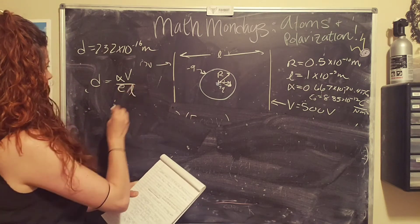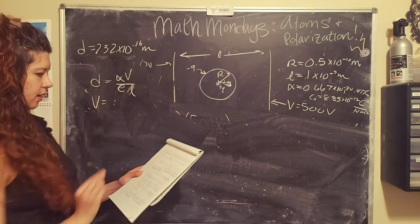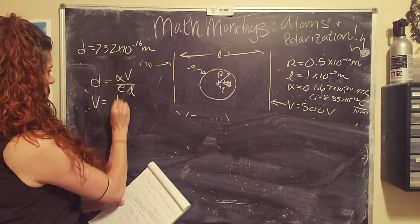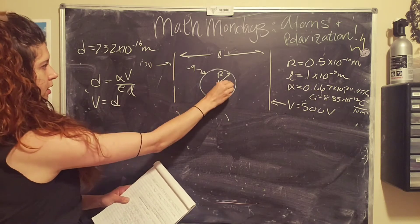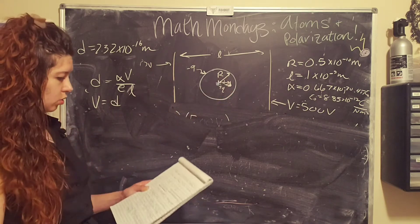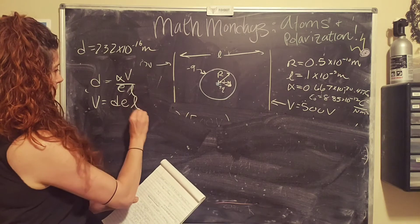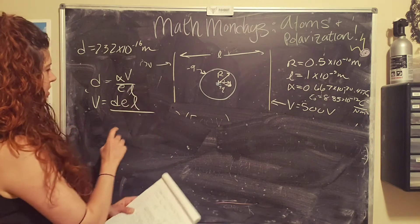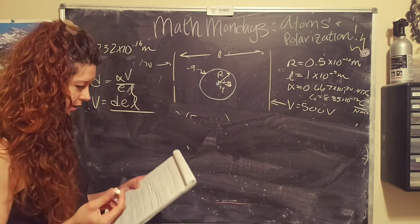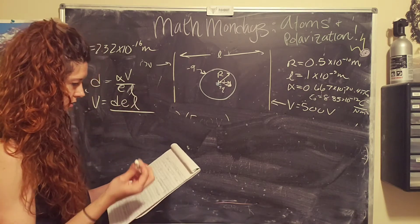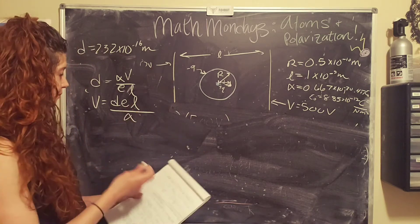My e's and my l's look very similar. We're going to get the voltage equals the distance that the nucleus moves times the charge of the electron times the separation distance, divided by alpha.